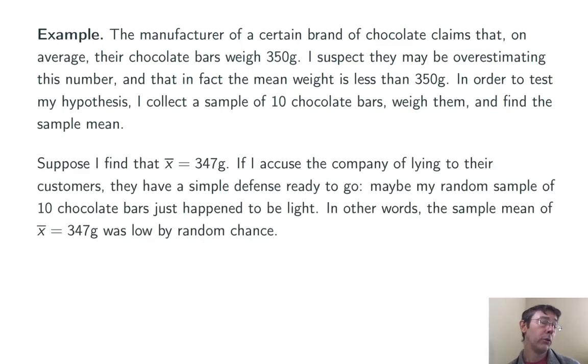So let's suppose that I get a sample mean of 347 grams, so obviously less than 350. This is evidence against the company's claim. But if I accuse them of lying about that population mean of 350 grams, they have a simple defense ready to go. Maybe my random sample of 10 chocolate bars just happened to be light because of random chance. And if I were to go out and get another sample mean, it might be 350 grams exactly, or it might even be a little bit more, again, just due to random chance.